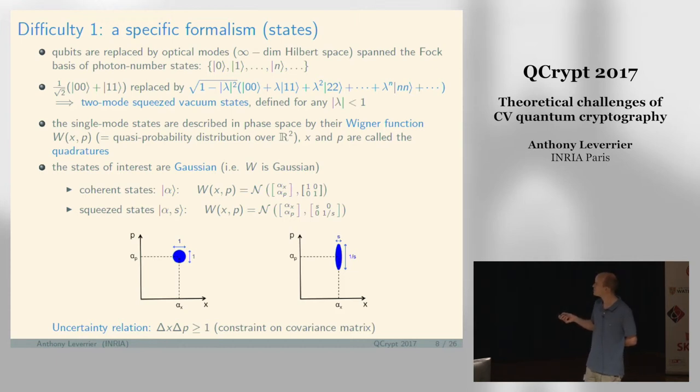You have coherent states, like the one I produce with this laser pointer, which has a Gaussian Wigner function distribution. It's centered on a point in phase space, and the variance along the x-axis is the same as the variance along the p-axis.